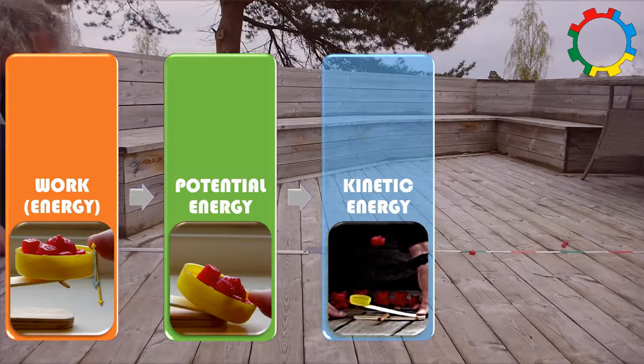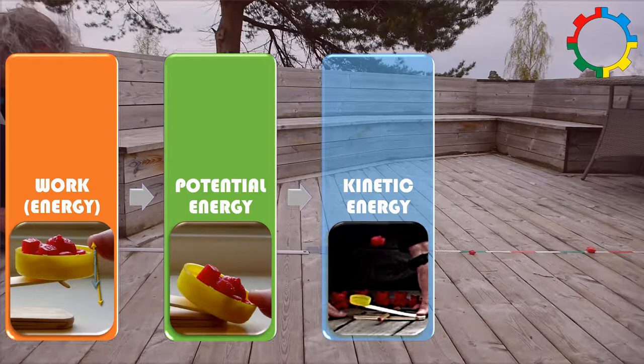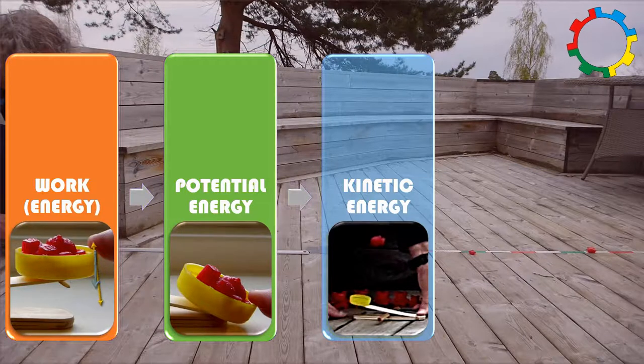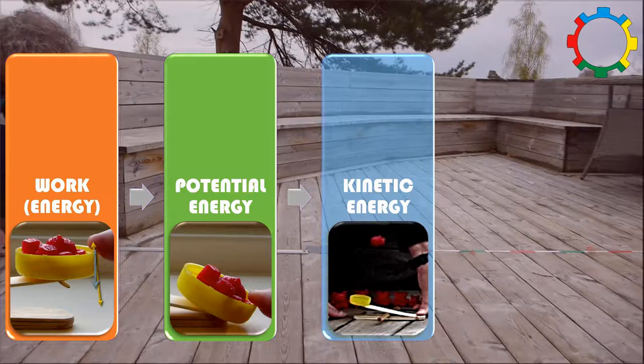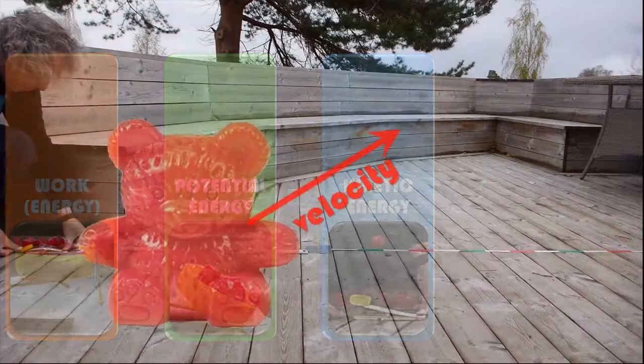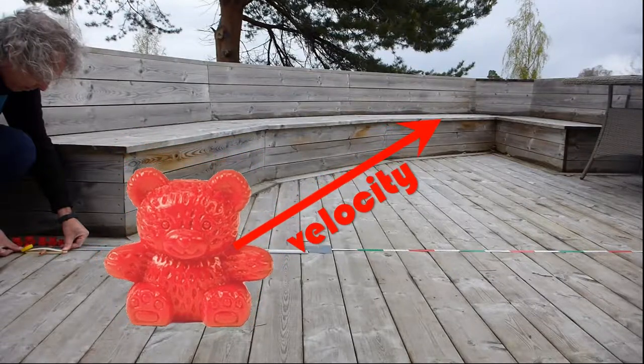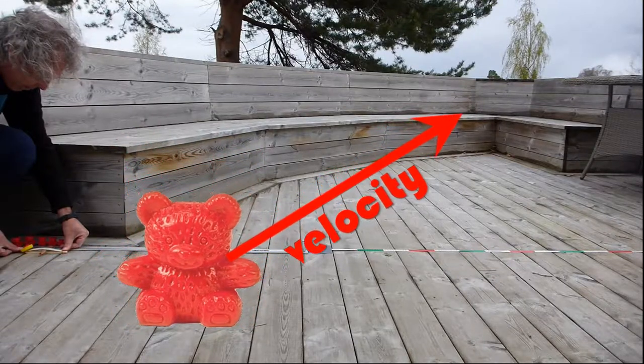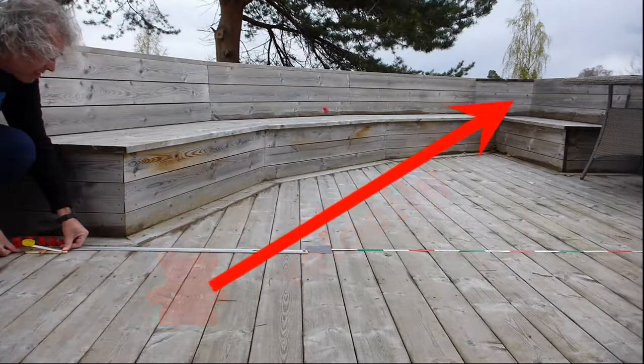The kinetic energy of an object depends only on the object's mass and its velocity. If two objects have the same kinetic energy, the lighter object must have a higher speed. That means the lighter the bear, the higher its velocity. The higher its velocity, the further it flies.